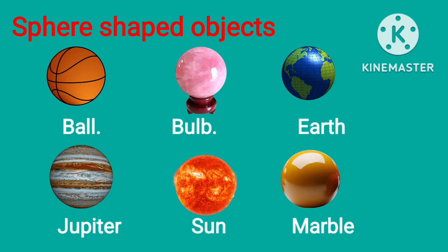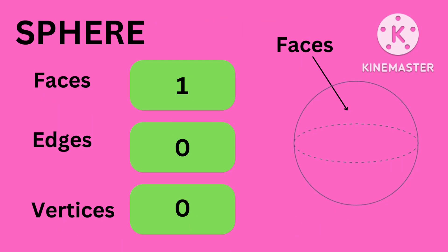Sphere-shaped objects: look at the shapes of objects below. All these objects have the shape of a sphere — ball, Earth, Jupiter, sun, marble. The sphere has one face, no edges, and no vertices or corners.